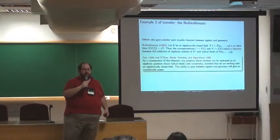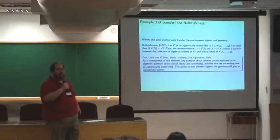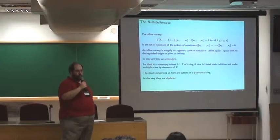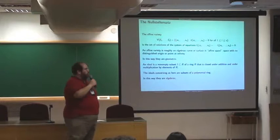So, from just an elementary textbook published 15 years ago or so, time flies. The passage reads as follows: as a consequence of this theorem, any question about varieties can be rephrased as an algebraic question about radical ideals. And conversely, provided that we are working over an algebraically closed field, this ability to pass between algebra and geometry will give us considerable power. So, I quote this just to make sure that you understand that I'm not making this up, that these folks take this transfer very seriously.